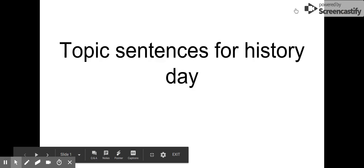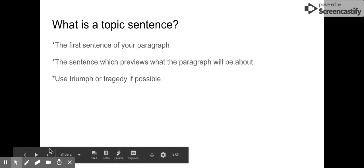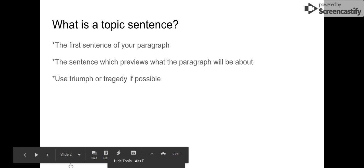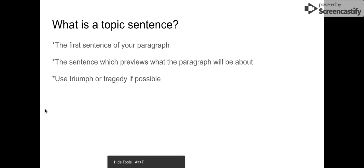Hi, guys. I'm going to be talking really fast about topic sentences for History Day. So first, what is a topic sentence? A topic sentence is the first sentence of each of your body paragraphs. It previews what the paragraph will be about — it just tells the reader what's going to be in the paragraph. Important for History Day: it's really important that you try to use the word triumph or tragedy if at all possible.